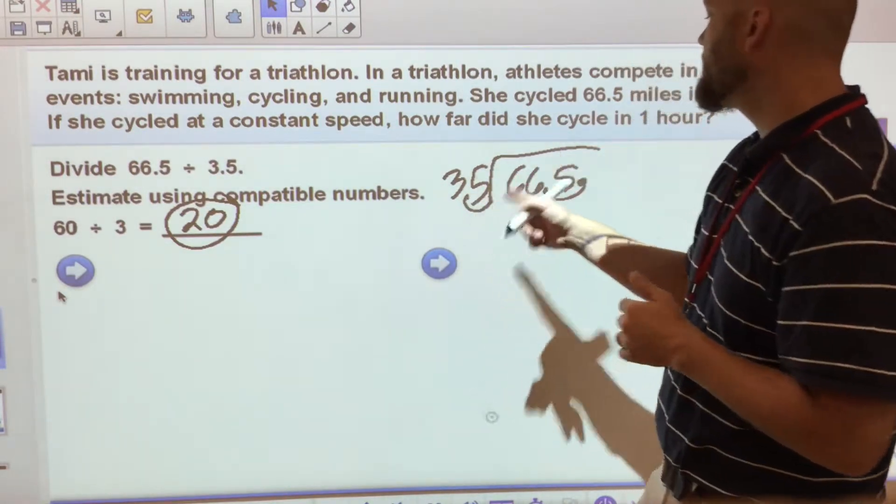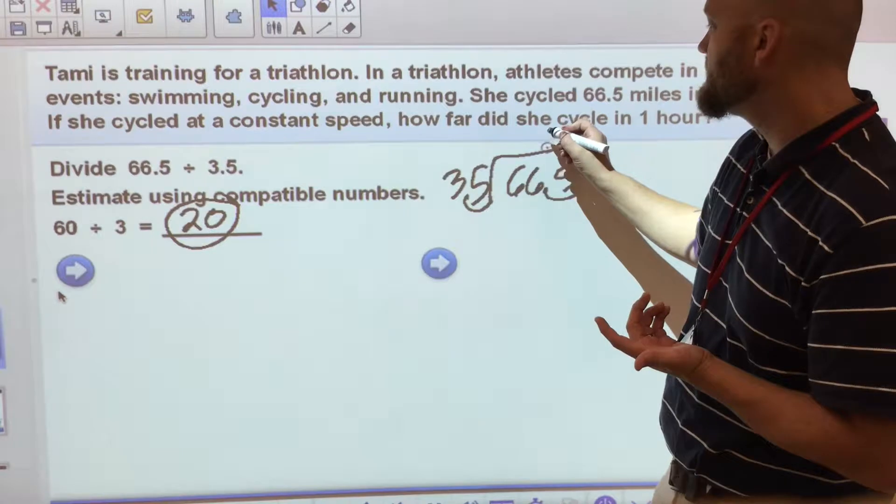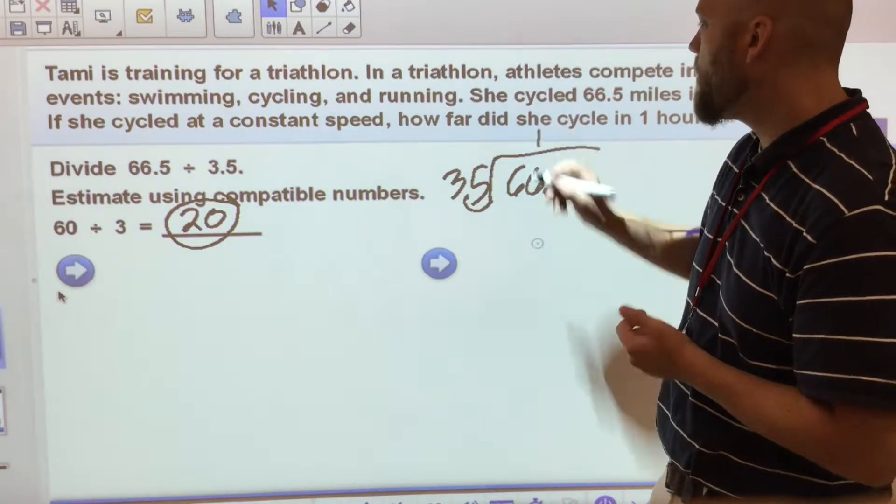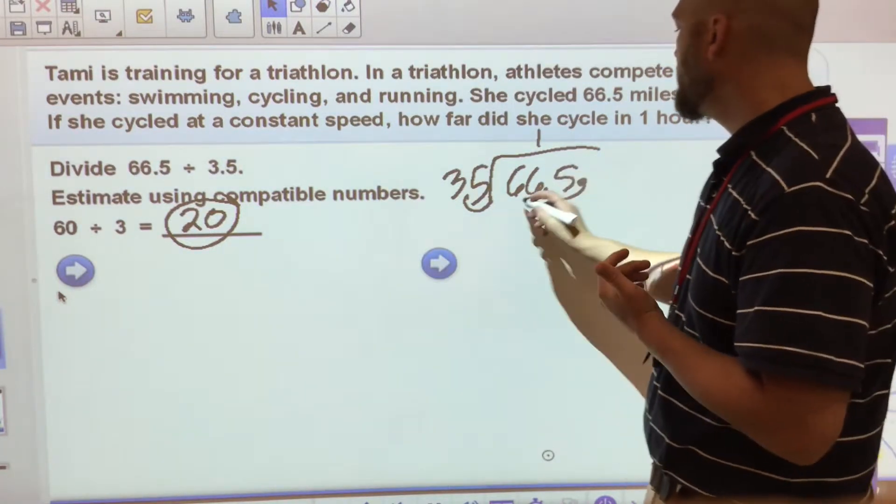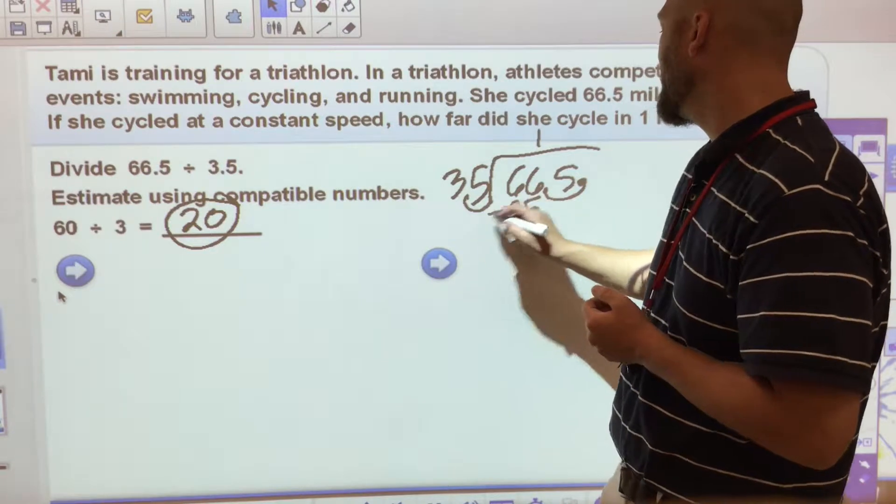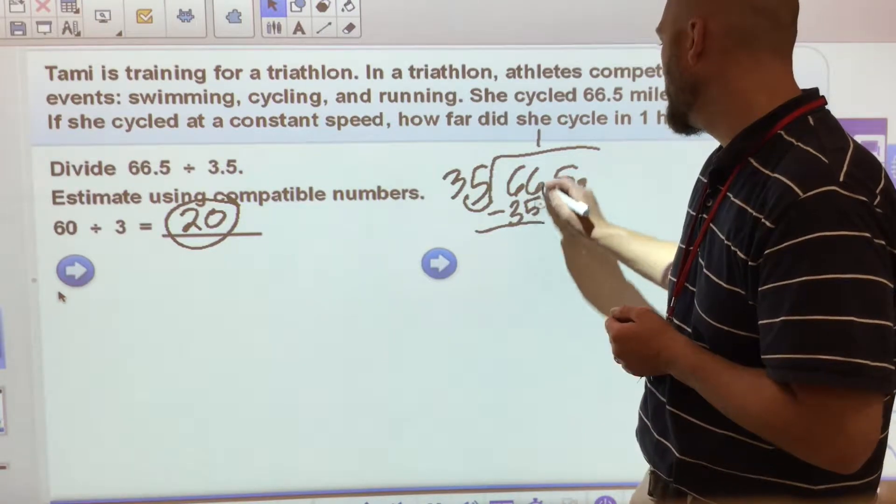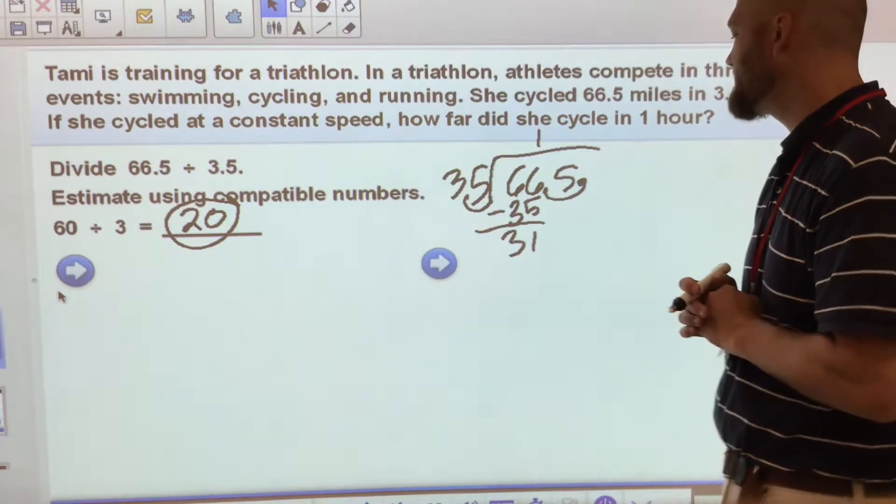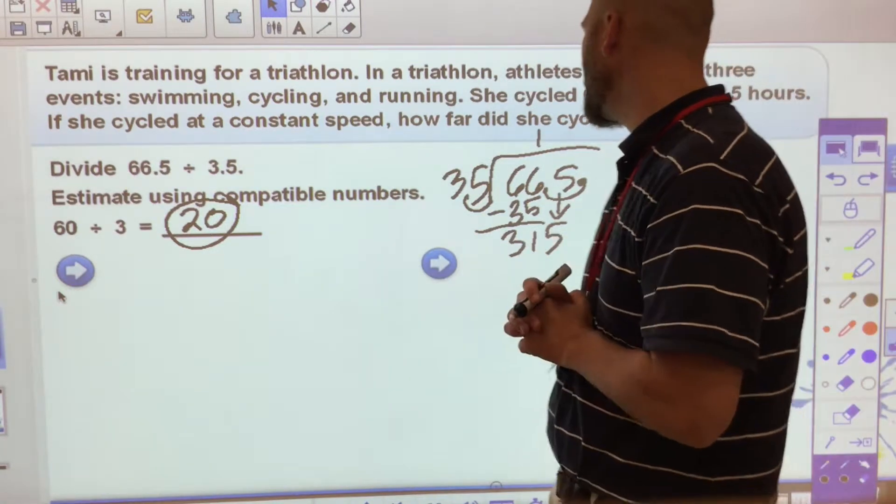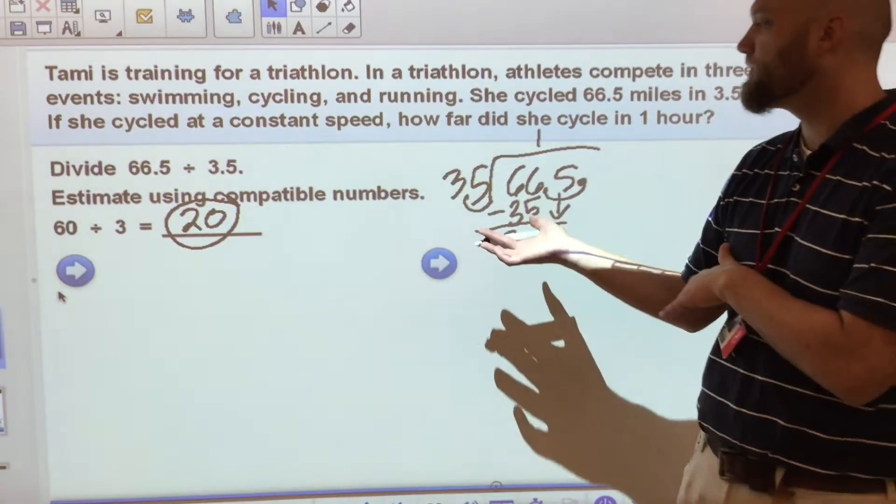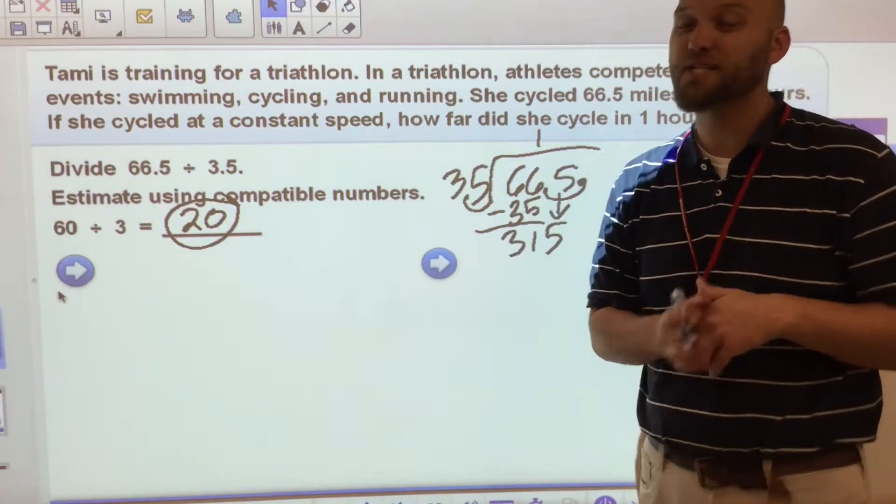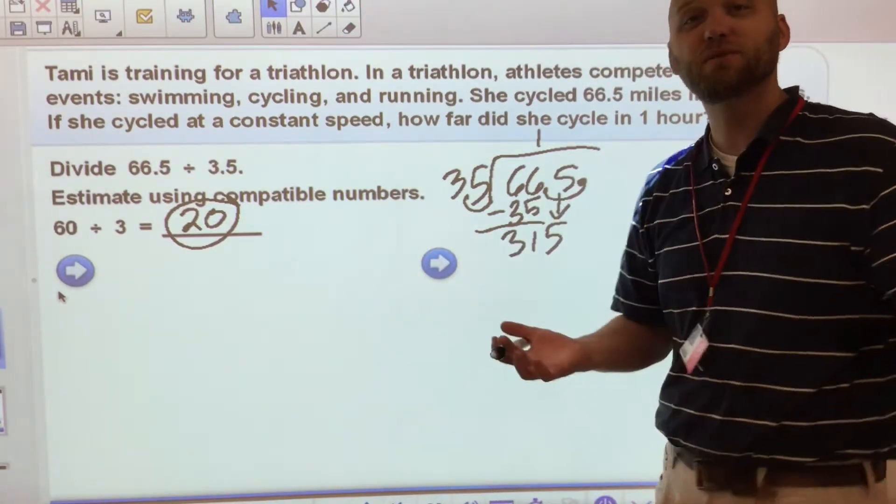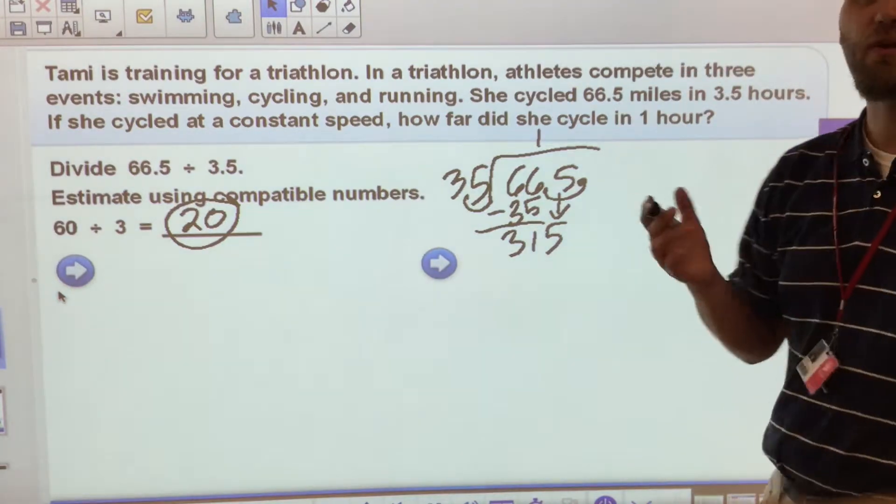So I end up with 35 goes into 66. How many times? Well, one time. And when I subtract it, I end up with 31. 31, and I bring down my 5 here. And I might ask myself, well, 35 into 315, I don't know my factors of 315 or my multiples of 35.